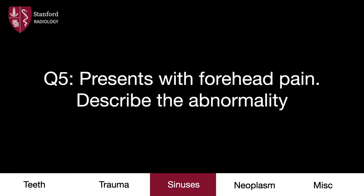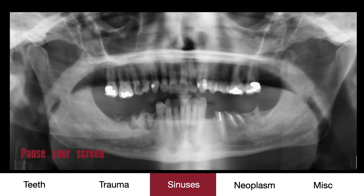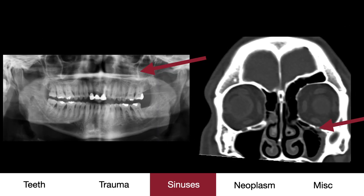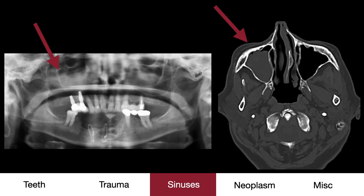Our next category is sinuses. In case five, we have an individual presenting with forehead pain. This panorex shows poor dentition with multiple dental caries and periapical lucencies. Note that there is asymmetric opacification of the left maxillary sinus relative to the right. This patient's forehead symptoms were likely due to referred pain from this region. Follow-up CT confirms our findings. This is a more subtle case of maxillary sinusitis on the left.